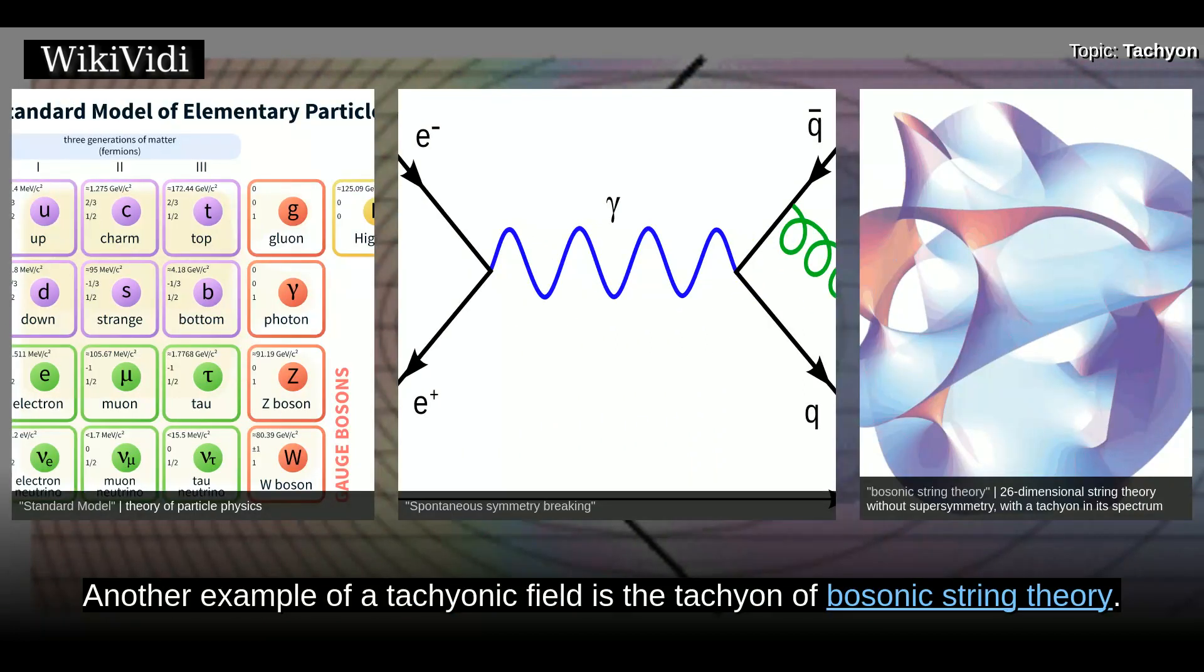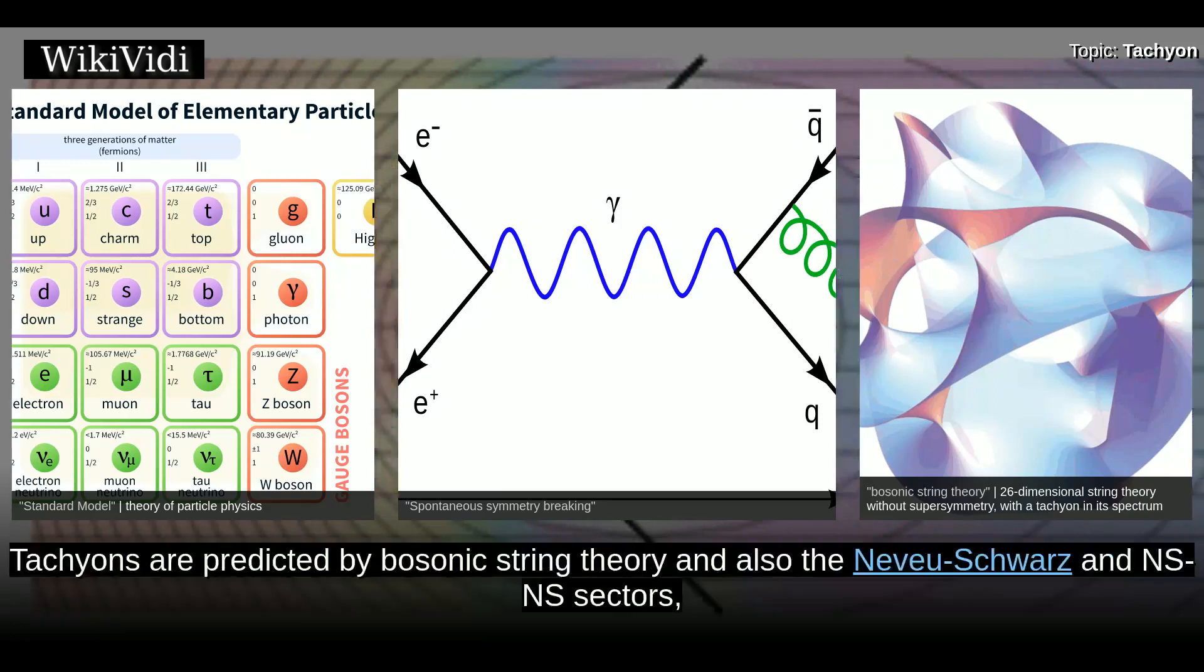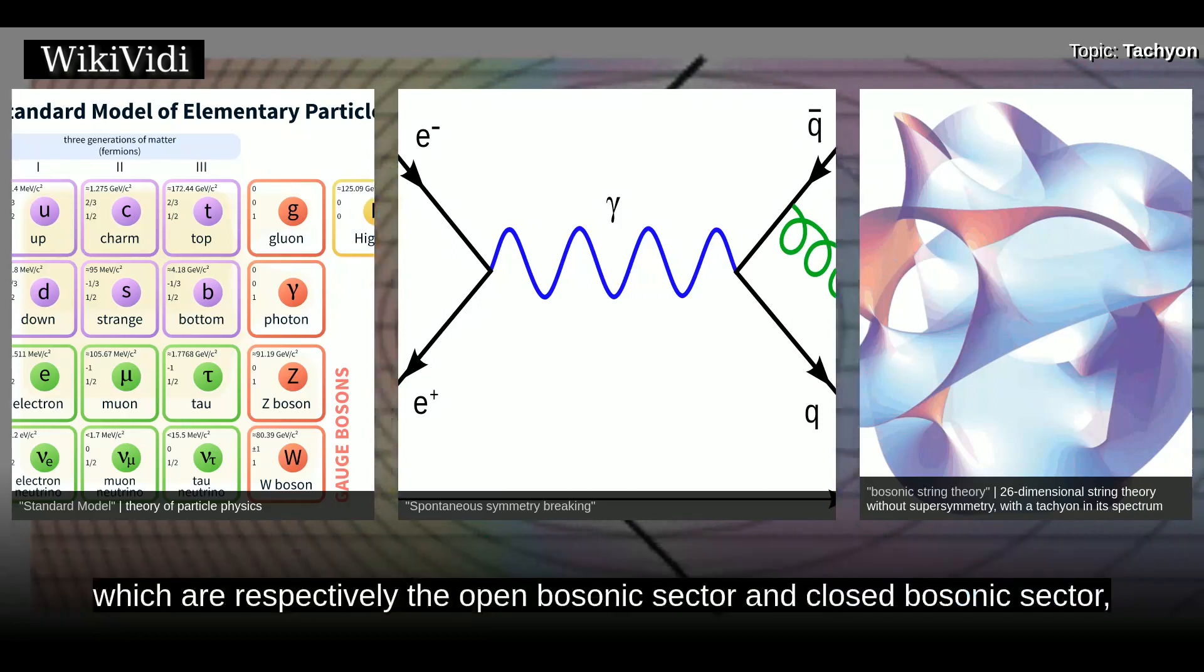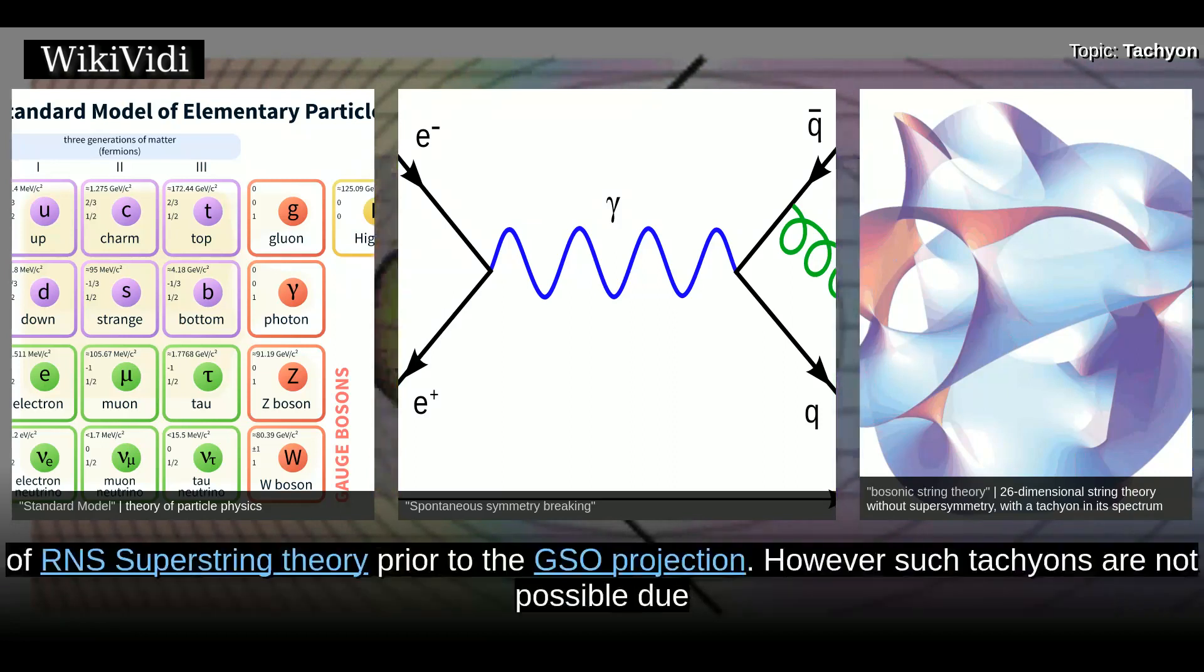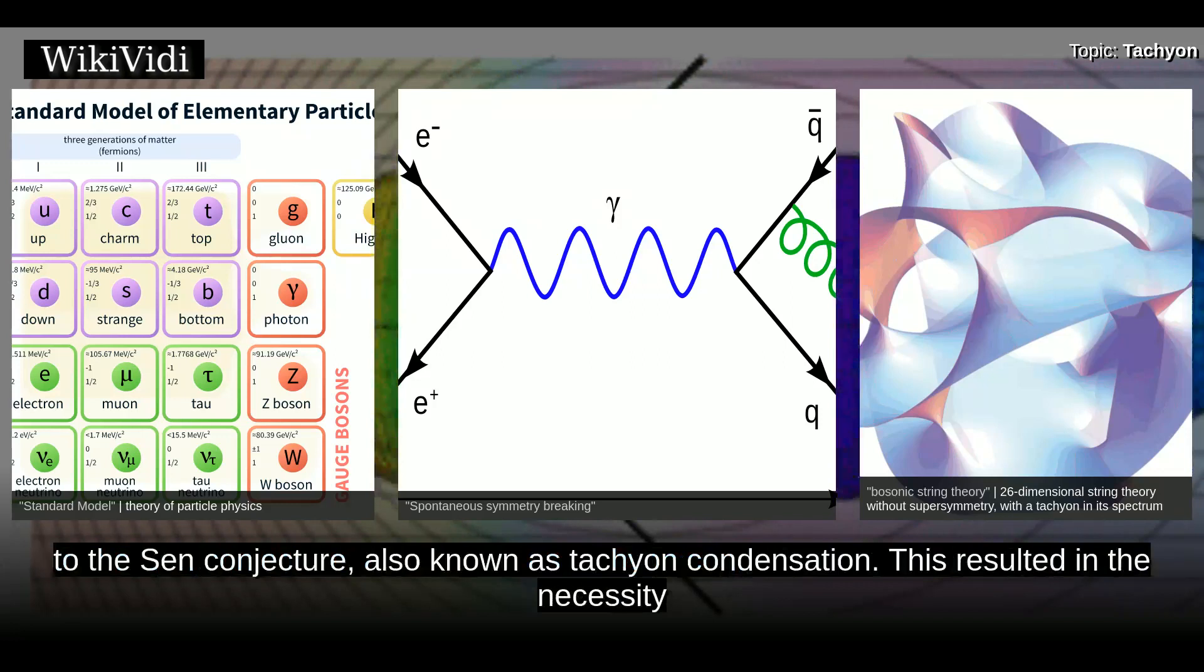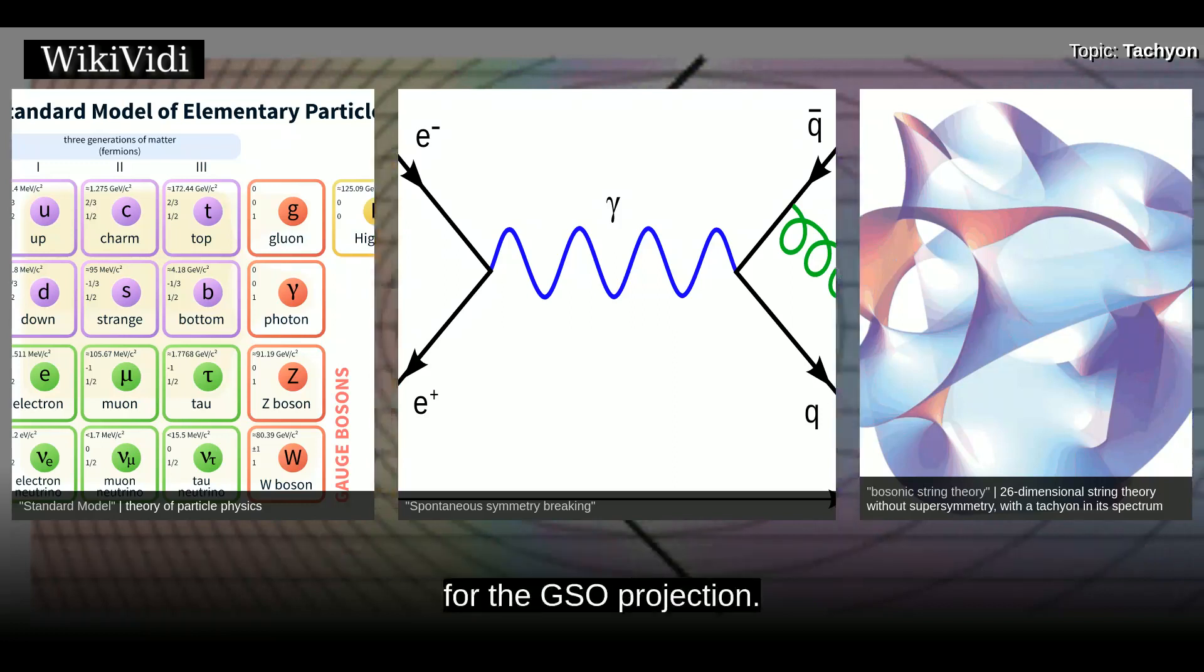Another example of a tachyonic field is the tachyon of bosonic string theory. Tachyons are predicted by bosonic string theory and also the Neveu-Schwarz and NS-NS sectors, which are respectively the open bosonic sector and closed bosonic sector of type I superstring theory prior to the GSO projection. However, such tachyons are not possible due to the Sen conjecture, also known as tachyon condensation. This resulted in the necessity for the GSO projection.